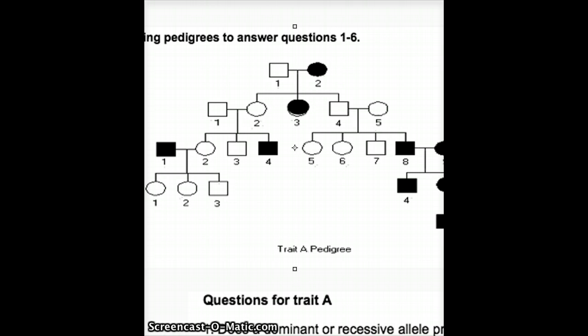I know since this is a recessive trait that anyone who has the trait is homozygous recessive. Anyone who has black shading should be two little alleles. If there are two unaffected parents or one unaffected parent, so basically if either parent is unaffected and has an affected child, that person has to be heterozygous. And if you did that in a Punnett square, you would see why. But if a parent has an affected child, the parent has to be heterozygous.